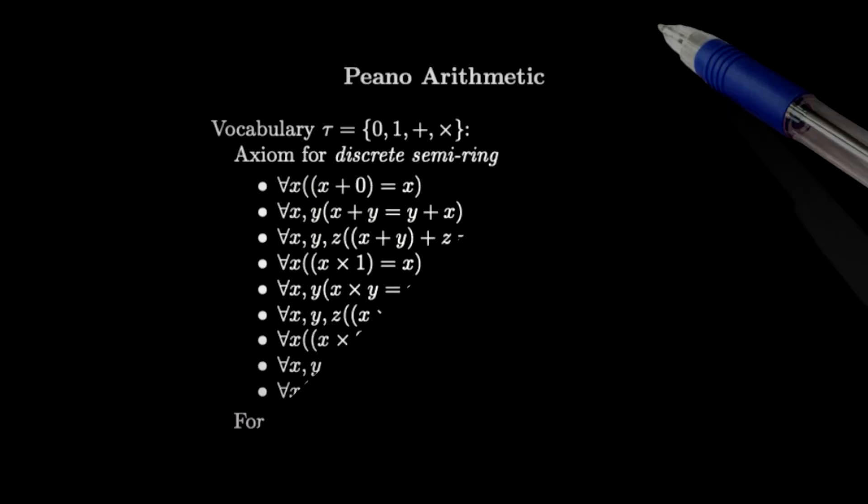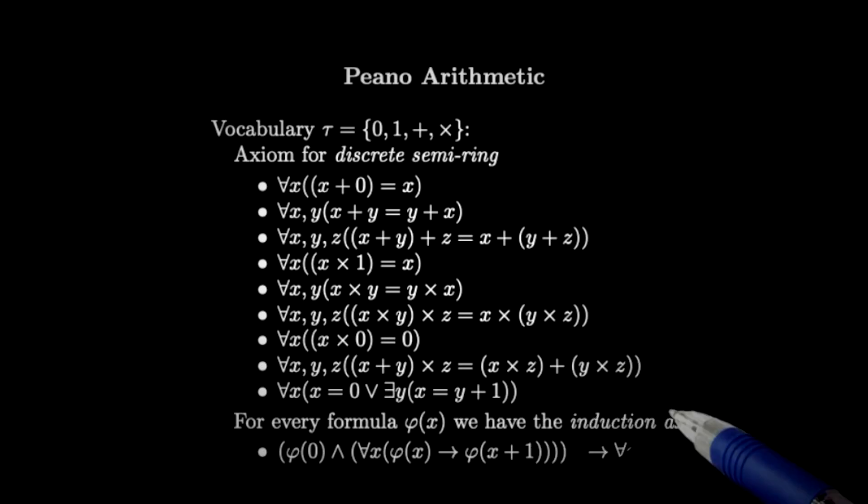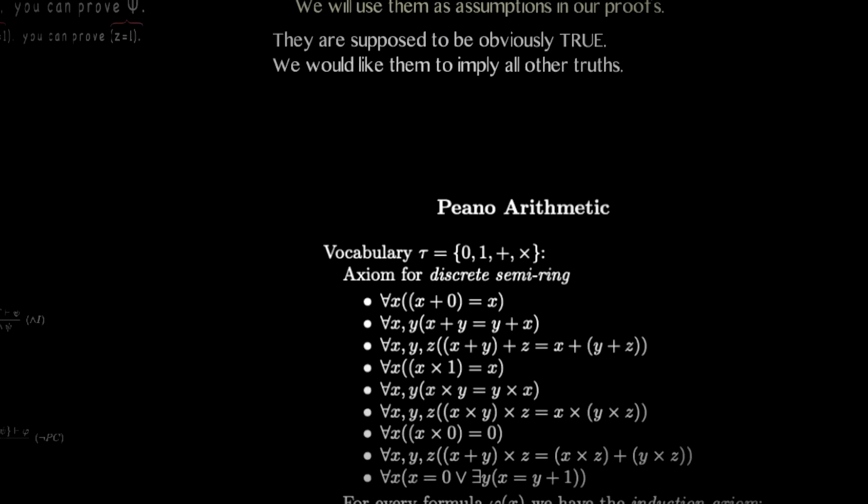Here's an example of a list of axioms. These are the Peano axioms. They are the standard axioms to work with when you're working with the natural numbers. They start with the very basic properties of 0, 1, plus, and times. And then we have the axioms for induction, which allow you to do proofs by induction. There is another list of axioms that is used to axiomatize all of mathematics. It's called the Zermelo-Fraenkel set theory.